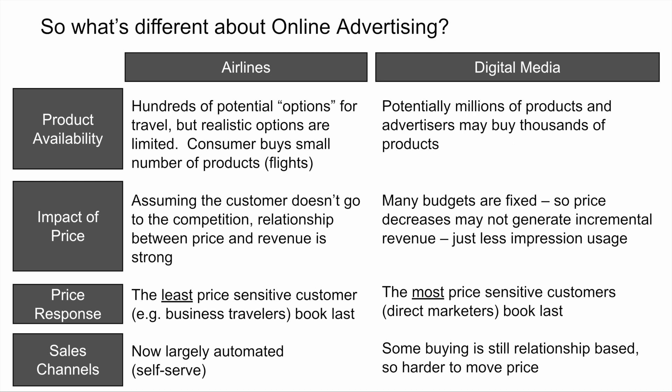The other important thing to think about is the impact of price. When airlines increase or decrease their pricing, assuming the consumer doesn't go to the competition, there can be a relatively straightforward relationship between price and revenue, because the consumer may still buy a given unit of inventory — in this case, the trip across the country. However, in digital media, budgets are fixed. An advertiser might have a million dollar campaign, so if the price decreases, it's not necessarily clear that the advertiser will immediately increase their budget and spend more money.